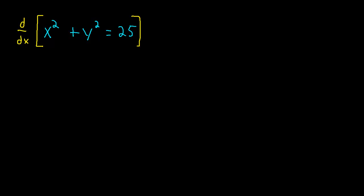What's the derivative of x squared with respect to x? It's just 2x. And how about the derivative of y squared with respect to x? Well by now you should know that we have to use the chain rule. The derivative of the outside function is 2y multiplied by the derivative of the inside function which is just y prime. And the derivative of 25 is just 0.